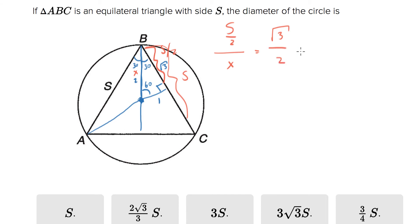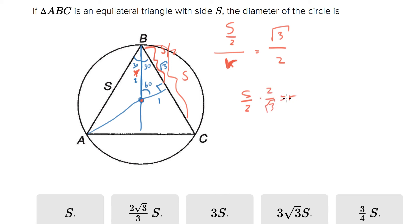Now if we solve for x — actually, I shouldn't have called it x. Let's call it r for radius, because it's the radius of that circle as well. So s over 2 over r equals root 3 over 2. So now we can solve this for r. We have s over 2 times 2 over root 3 equals r. So r is s over root 3.